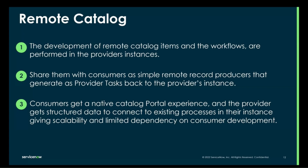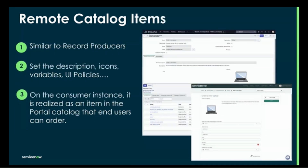If a customer no longer uses that service, it can go ahead and remove it. On the consumer side, they get this record producer — a remote record producer — and it shows up within the catalog portal experience. By default it shows up within the IT Service Portal. As a customer, they can go ahead and change it if they want to put it in different catalogs and different categories, then approve it so it's usable and can be ordered by their end users.